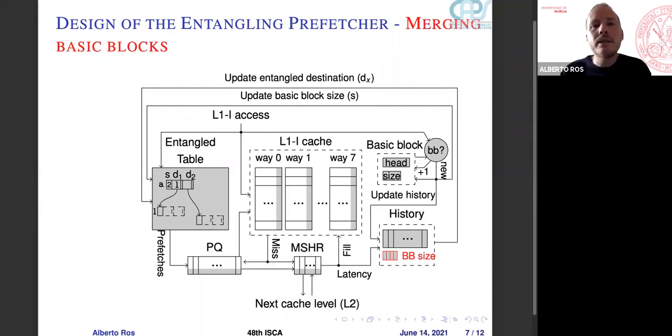Finally, we do merging of basic blocks. That means two basic blocks that are not consecutive but they share some cache lines can be merged into one basic block. For that, we use a basic block size structure along with the history. We can add the basic block size, and we can compute: my address plus my size, is this other address in between these two values? And then I can merge these two into one bigger basic block.